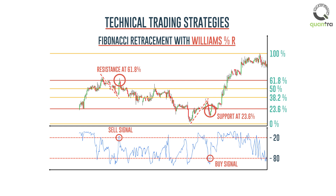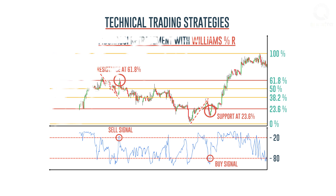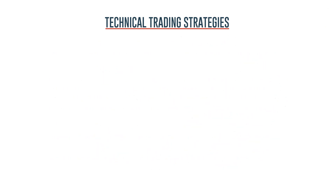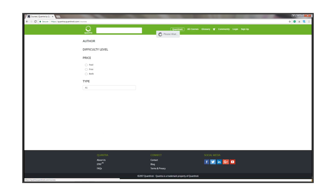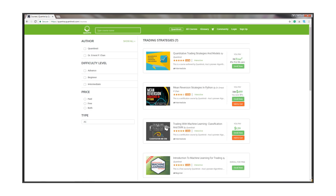This way, Fibonacci retracement and Williams Percent R work in conjunction to provide a momentum based strategy. To learn and implement quant strategies in detail, enroll for our course which covers more than six strategies and models. Check out the quantitative trading strategies and models course on Quantra.